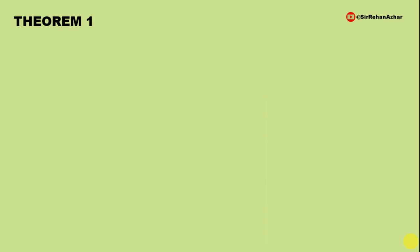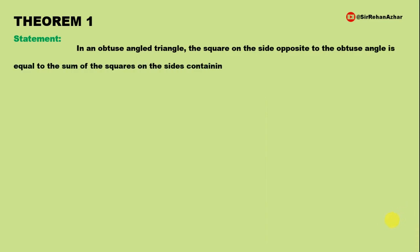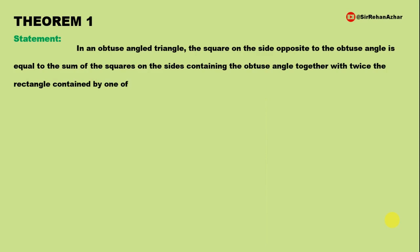Theorem No. 1 Statement: In an obtuse angle triangle, the square on the side opposite to the obtuse angle is equal to the sum of squares on the sides containing the obtuse angle, together with twice the rectangle contained by one of the sides and the projection on it of the other.